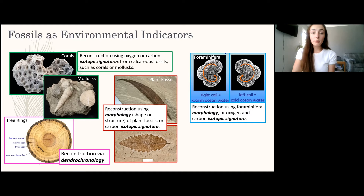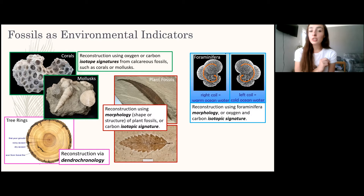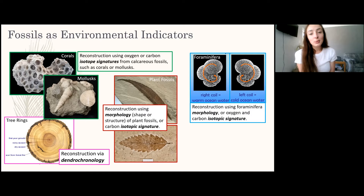Foraminifera are microscopic fossils — they look like grains of sand to the naked eye — but under a microscope they are extremely complex, forming tests or skeletons with chambers that coil in certain directions. Certain species coil right versus left depending on ocean water temperature, so their coiling direction tells us past ocean temperatures. Being carbonate, they also yield oxygen and carbon isotope ratios to estimate water temperature and chemistry.